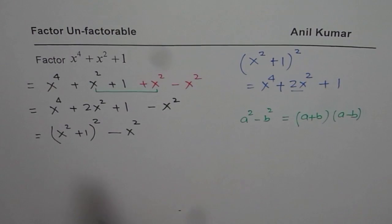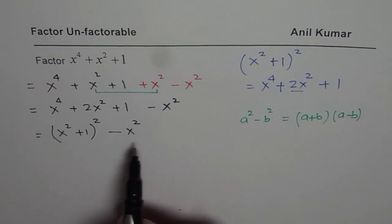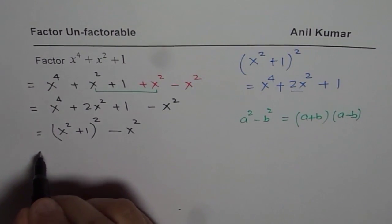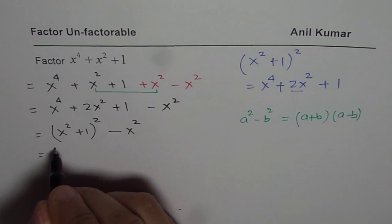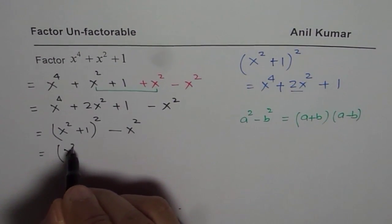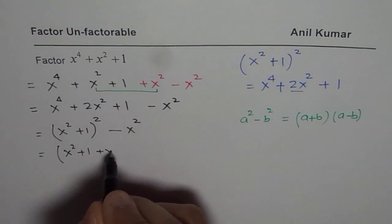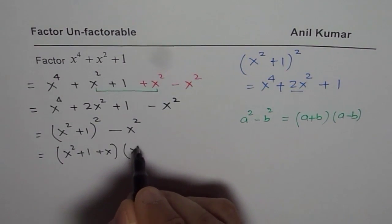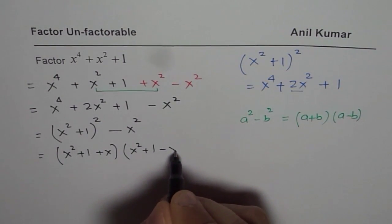Now, a for us is x square plus 1 and b is x. So, let us apply this formula and we can write this as x square plus 1 plus x times x square plus 1 minus x.